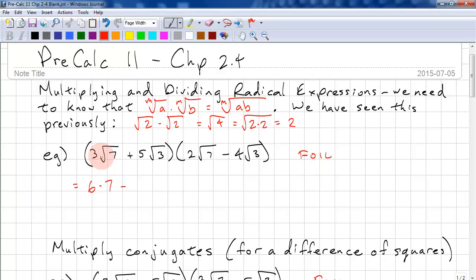Minus outer, we have this one times this one. So we have 3 times 4, that's 12. And then 7 times 3, that's root 21. Inner, we have these two. 5 times 2, that's 10. And 3 times 7, that's root 21. And finally we have last. So 5 root 3 times negative 4 root 3. 5 times negative 4 is minus 20. Always be careful of your minus signs. And then 3 times 3, that's 9, but we're looking for 3 squared. So the square root of 3 squared is 3.